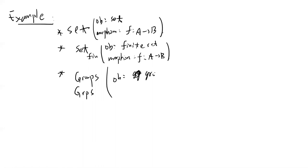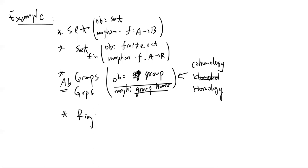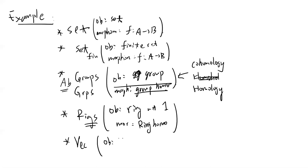Another example is Grp (groups): the objects are all groups and the morphisms are the standard group homomorphisms. You can restrict this to the category of abelian groups, with abelian group homomorphisms — this is famously connected to cohomology and homology in topology. Also Rings: objects are rings with identity and morphisms are ring homomorphisms. And Vect: objects are vector spaces and morphisms are linear transformations.